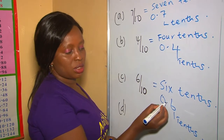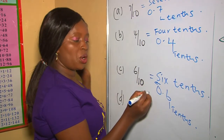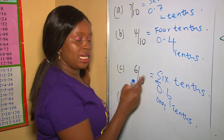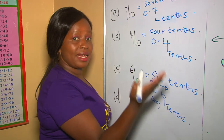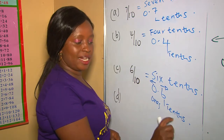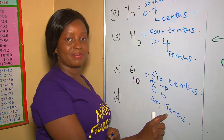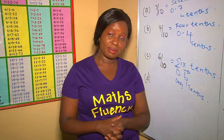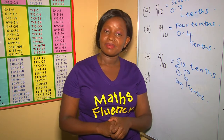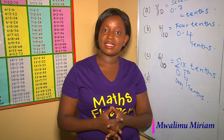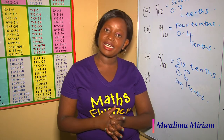Going towards the left of the decimal point, we have 1s, 10s, and so on. Going towards the right of the decimal point, it's tenths — the place value of the first digit is tenths. I wish you all the best, and kindly subscribe, also press the notification bell, share with your friends, and also practice. Remember, practice makes perfect. Thanks for watching. Bye bye.